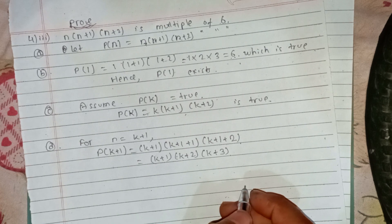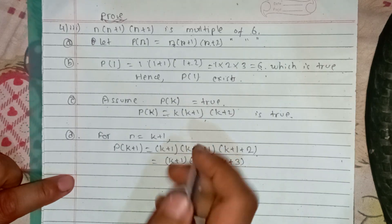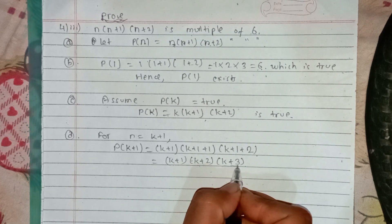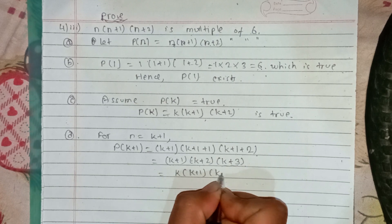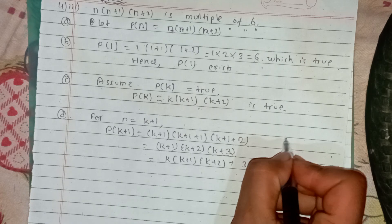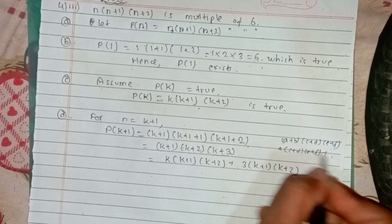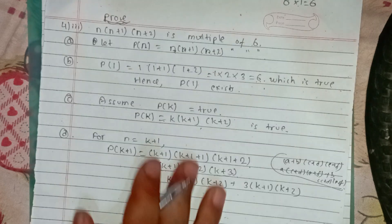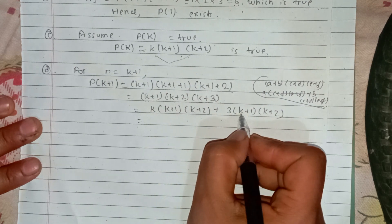We will remove P(k) from the expression. The expression k plus 1 into k plus 2 into k plus 3 can be expanded. Using the assumed P(k), k into k plus 1 into k plus 2 is divisible by 6. We can factor the terms and show that k plus 1 into k plus 2 is true, so the full expression is also true.